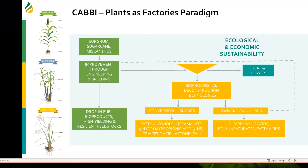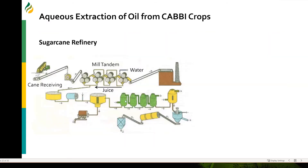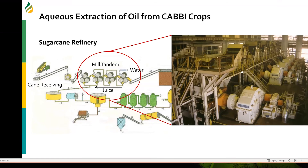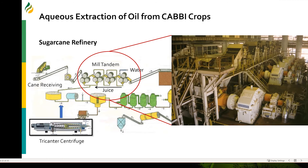CABI is all about producing oil in the vegetative tissues of biomass crops like sugarcane, sorghum, and miscanthus. We'd like to use the same kind of aqueous extraction from these CABI crops, envisioning it just like how sugarcane is processed in a sugarcane refinery — it arrives, goes through a mill tandem with large rollers that crush the sugarcane and get the juice out. If lipid cane goes through that, the water at the other end carries the oil into the juice, and then a tricanter centrifuge can recover the oil right there.